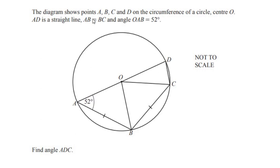AB is given equal to side BC, and angle OAB is given as 52 degrees. We have to find the angle ADC — the angle at D between A and C.